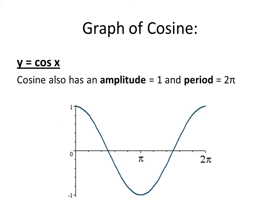Now compare that to cosine. Cosine and sine look identical except for the starting location. The graph of cosine of x starts at its highest point, which in this case is one, then goes down to negative one and comes back up. It has the same amplitude and period as sine — amplitude of one and a period of 2π. The big difference is that cosine will always start at its highest point. That's the only easy way to differentiate between sine and cosine, since the amplitude and period are both identical.